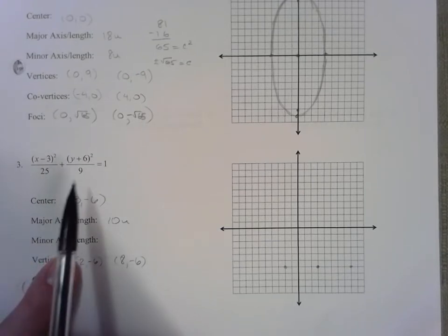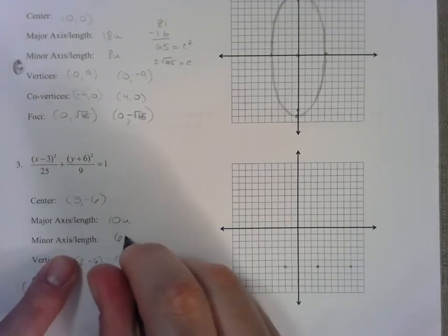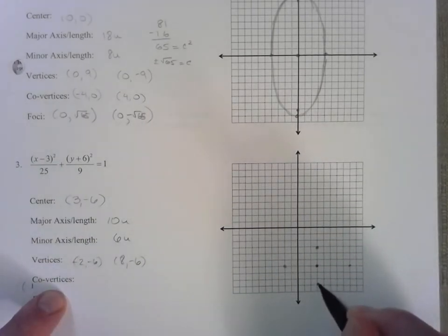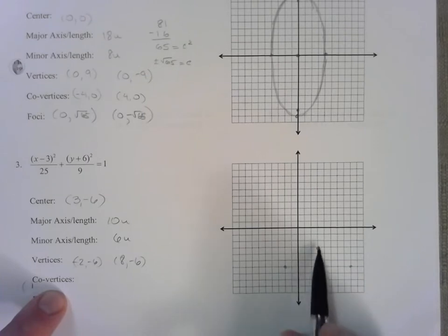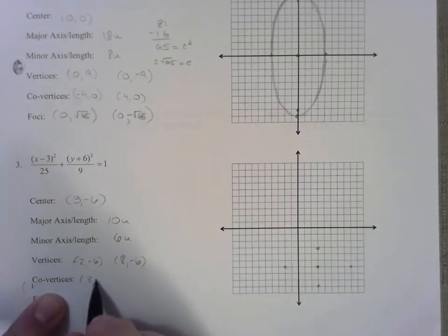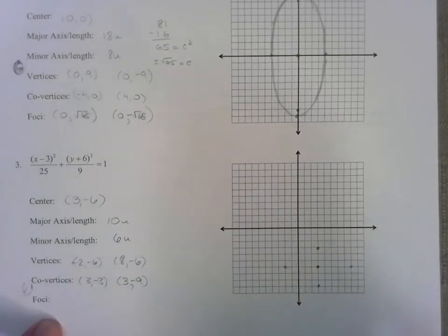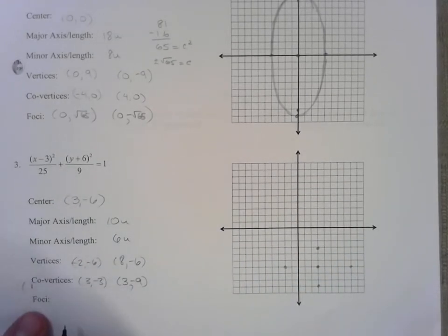Our minor axis would be 3 up, 3 down or 6 units, 3 up, 3 down. Go 3 up. Let's go 3 down. Or these points. This would be (3,-3). And this would be (3,-9). So yeah, you can do this from the graph, but you don't always have graph paper, so I haven't done that in the past. Alright.